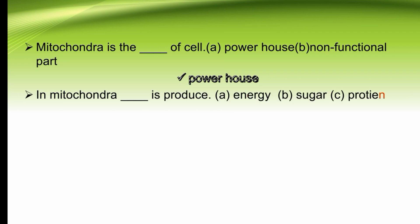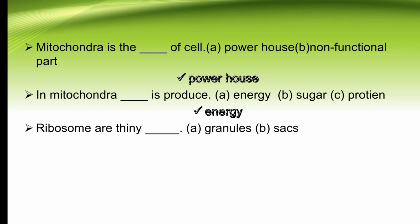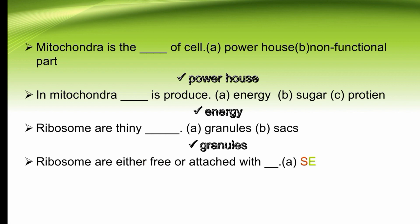In mitochondria, dash is produced — energy, sugar, or protein. Energy is produced in the form of ATP. The right option is A. Ribosomes are tiny dash — granules or sacs. Ribosomes are tiny granules. The right option is A. Ribosomes are either free or attached with dash — rough endoplasmic reticulum or smooth endoplasmic reticulum. Ribosomes are either free or attached with rough endoplasmic reticulum. The right option is B.